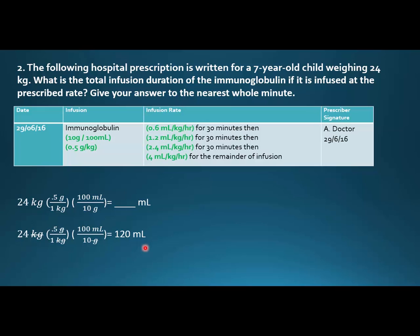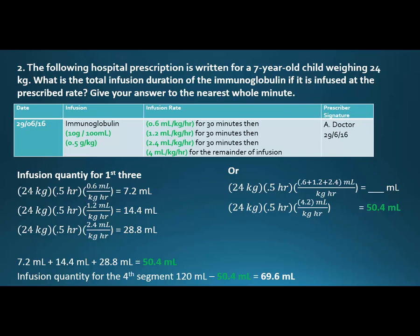We'll figure out the infusion quantities for the first three segments, but we'll need 120mls for the fourth. There are two ways to do this — a long way and a short way. The short way is to recognize you're going from 0.6 to 1.2 to 2.4, doubling each time, so 0.6 plus 1.2 plus 2.4 equals 4.2. Or you can work each out: 7.2mls, 14.4mls, and 28.8mls, which also totals 50.4mls.